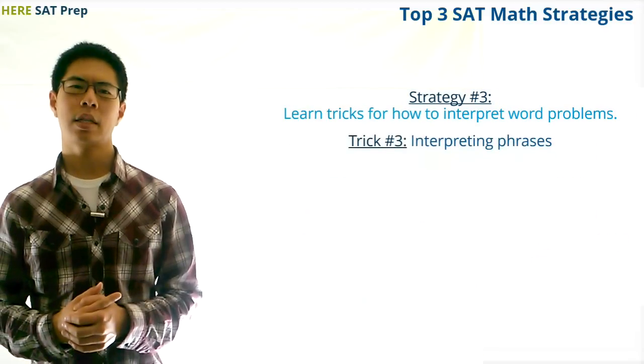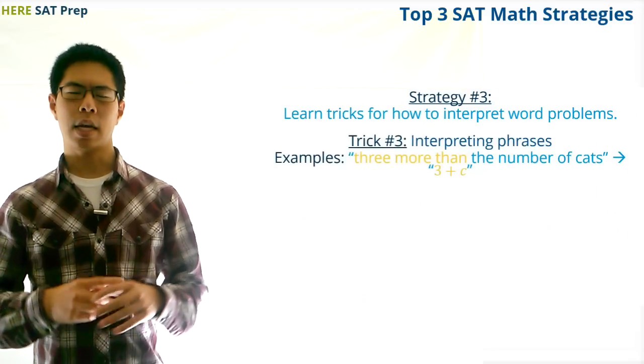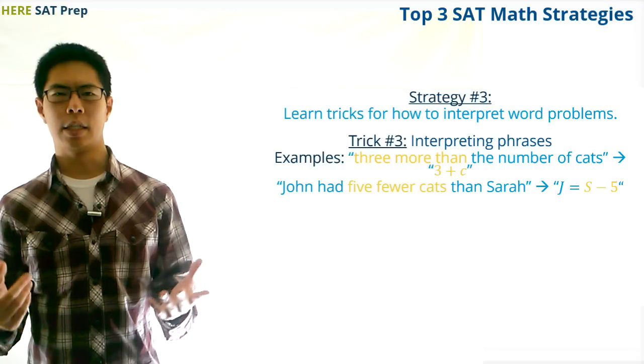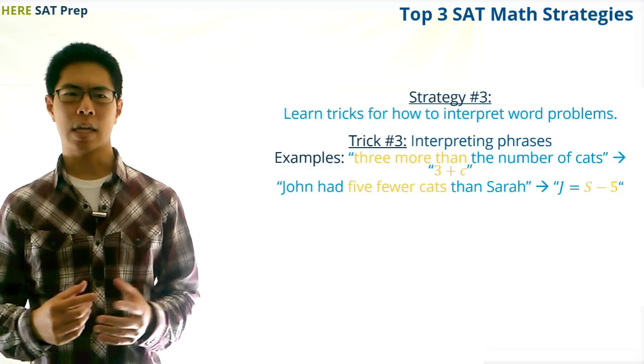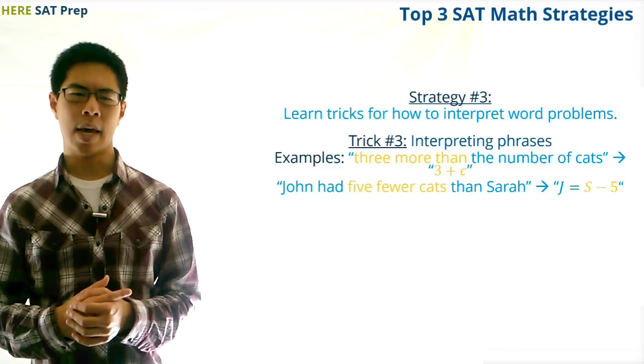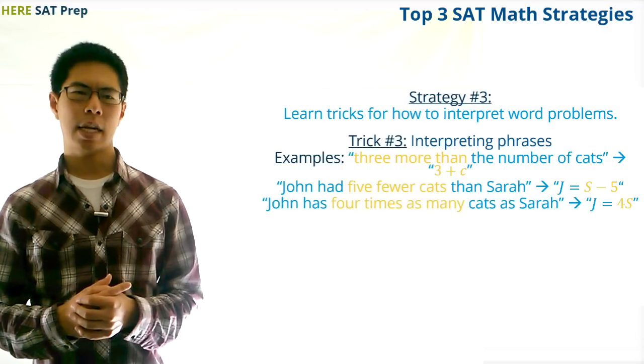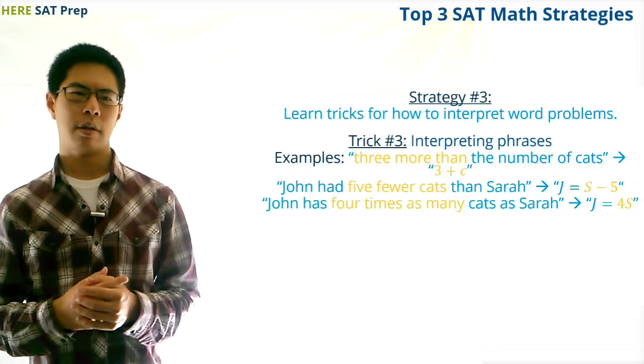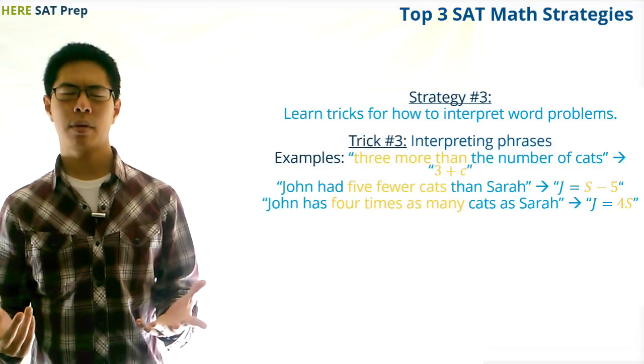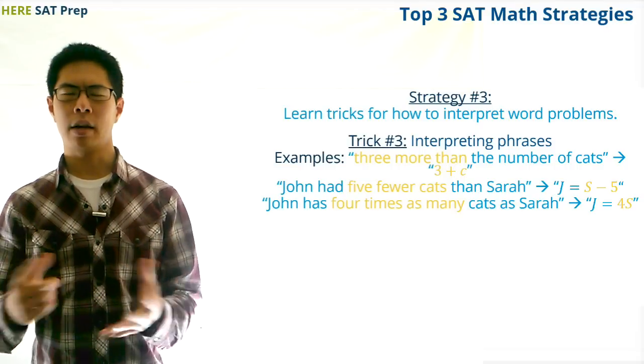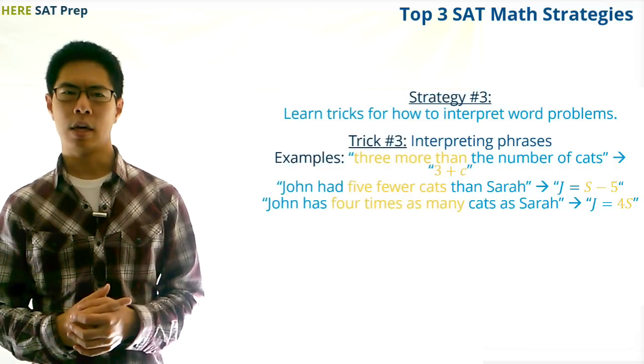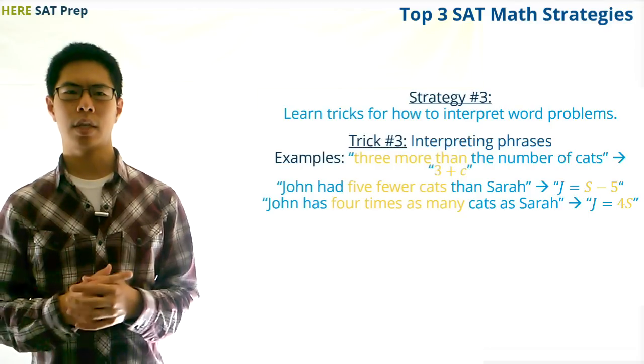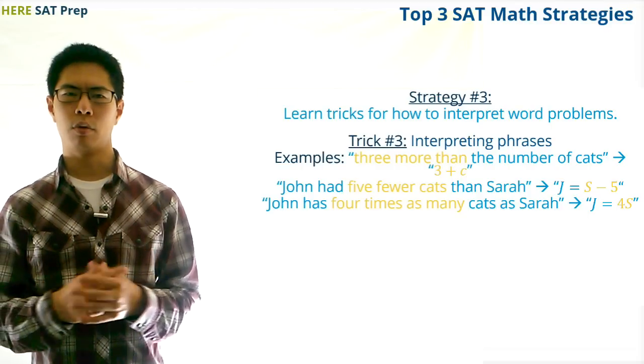Third, another thing to recognize for word problems is that a phrase like three more than the number of cats should be interpreted as three plus c. A phrase like John had five fewer cats than Sarah should be interpreted as j equals s minus five. And a phrase like John has four times as many cats as Sarah should be interpreted as j equals four times s. In these examples, the words has or had functions in the same way as the words is and was that we just mentioned. So when you take the SAT math test, be on the lookout for key words like these that tell you what kind of math symbol you should replace them with.